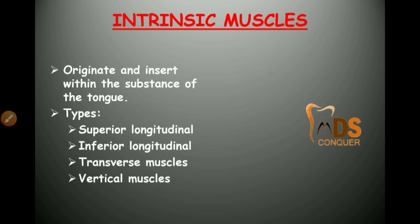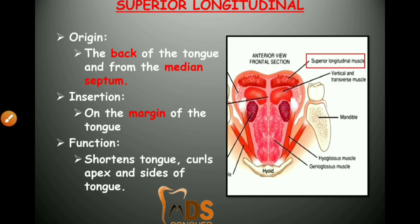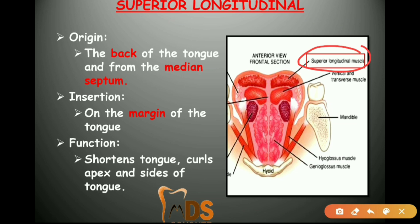The muscles of the tongue are divided into intrinsic and extrinsic types. For any muscle, write its origin, insertion, and function. The intrinsic muscles are: superior longitudinal, inferior longitudinal, transverse, and vertical. The superior longitudinal muscle originates from the back of the tongue and inserts into the margins of the tongue. Its function is to shorten the tongue and curl the apex and sides.